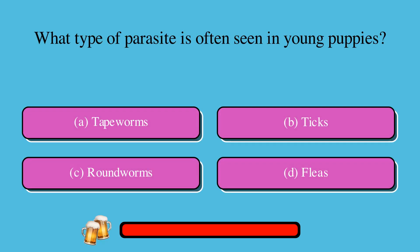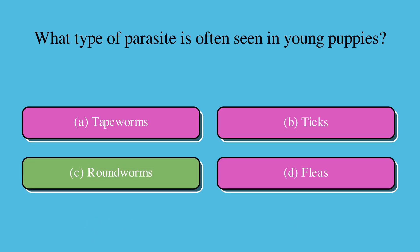What type of parasite is often seen in young puppies? A. Tapeworms, B. Ticks, C. Roundworms, or D. Fleas. The correct answer is C. Roundworms.